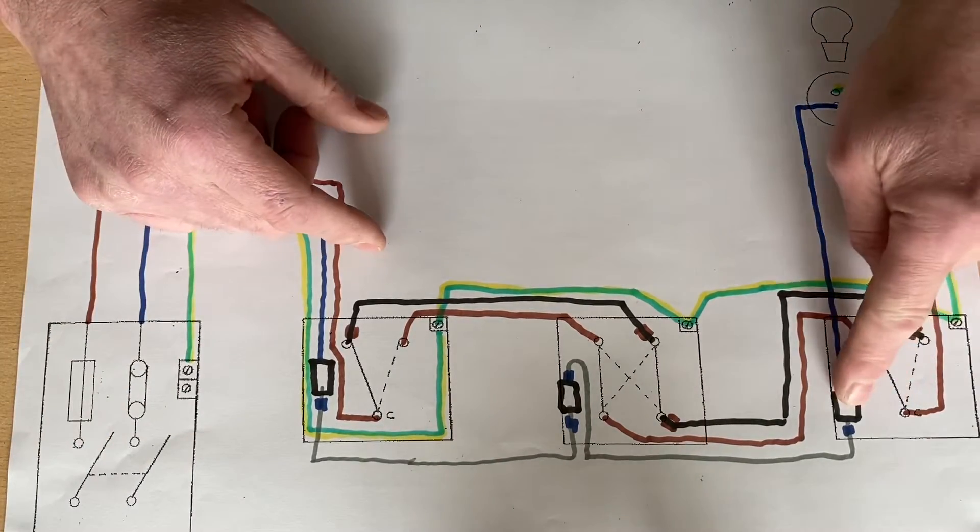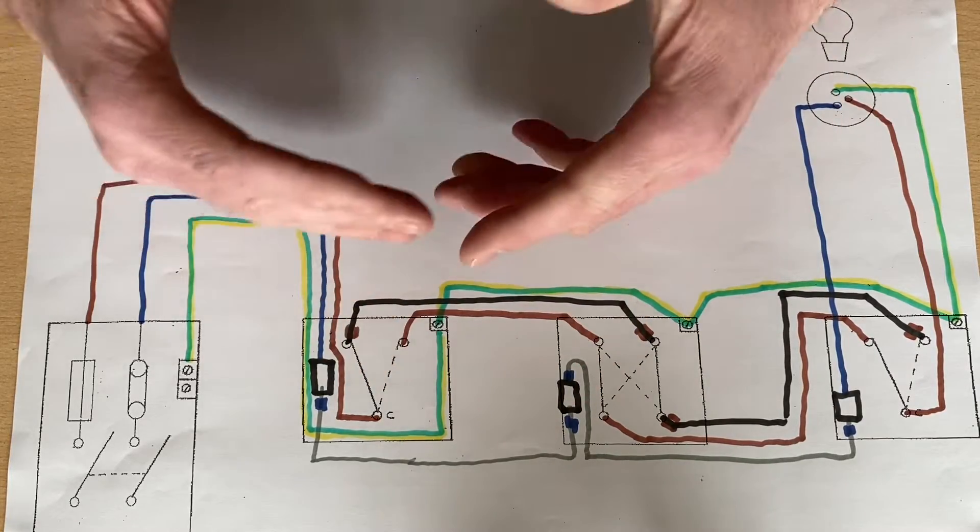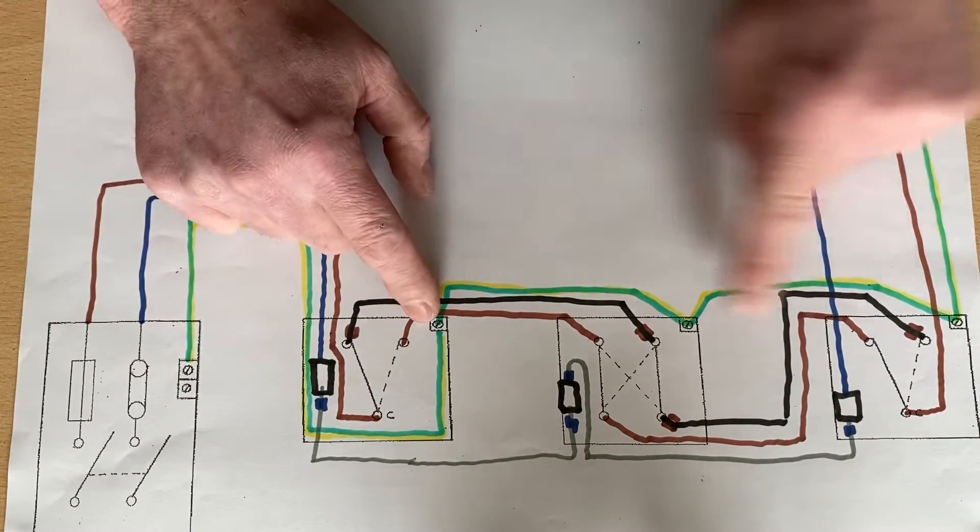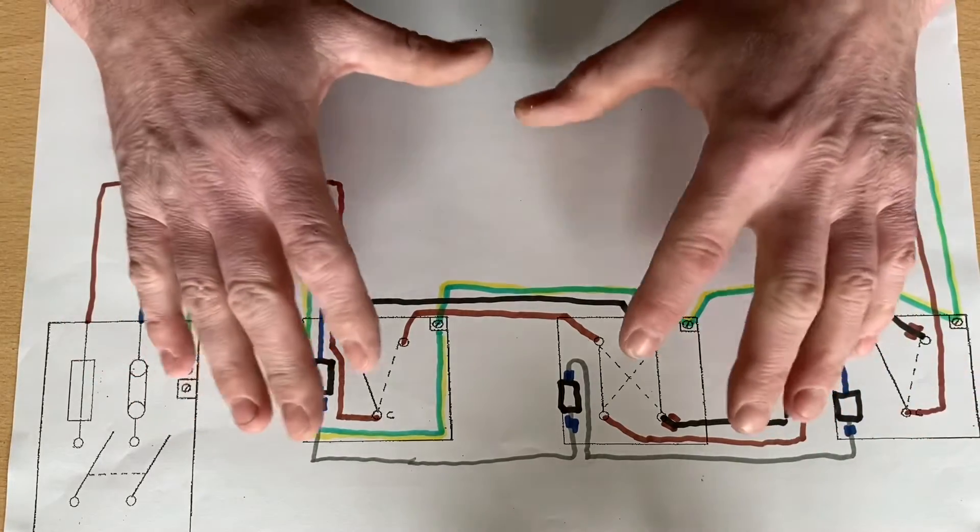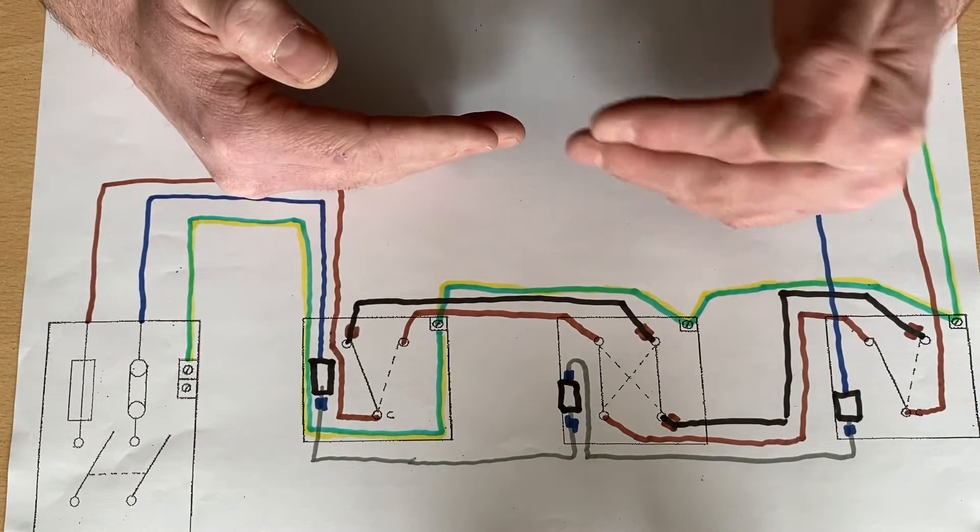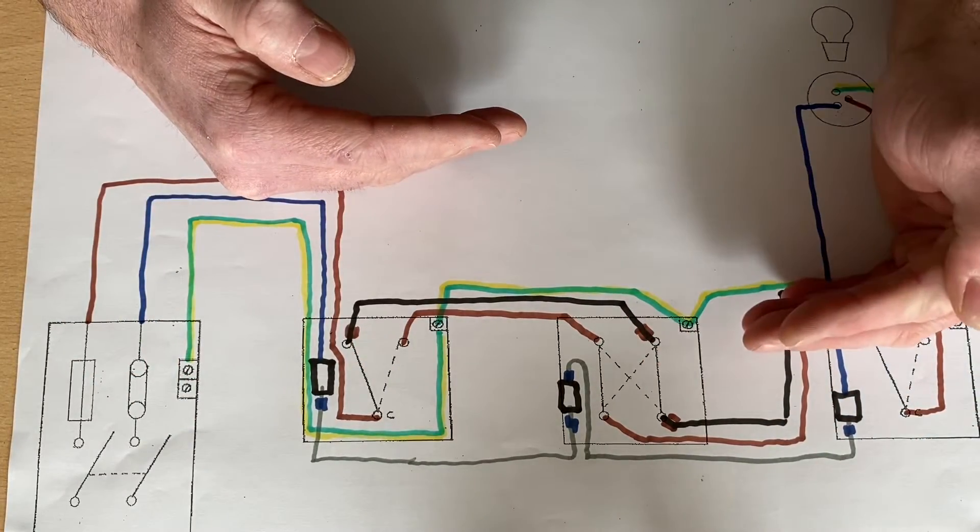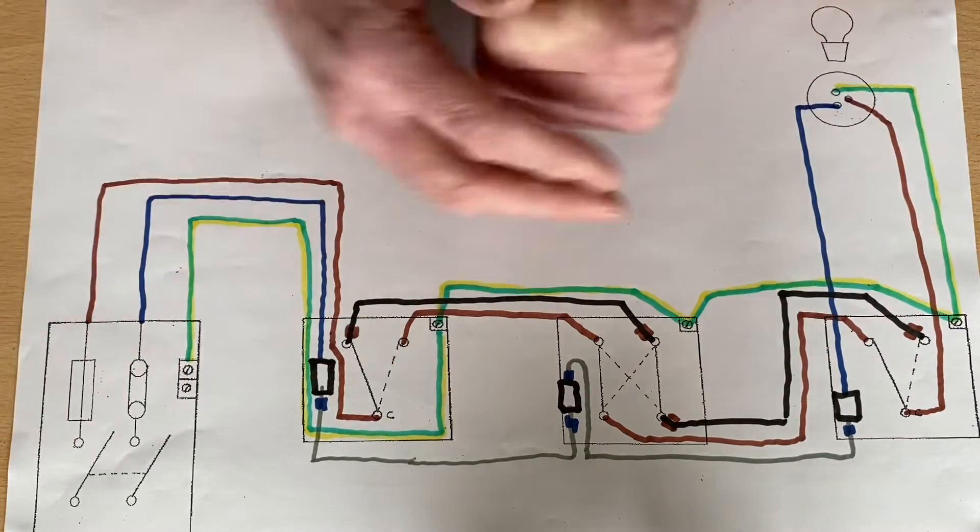Bearing in mind we do have a neutral at every single light switch from the system that we've wired here, as well as a CPC. We'll also look at how we can add more lighting points to the circuit. So let's break down what we've got here.